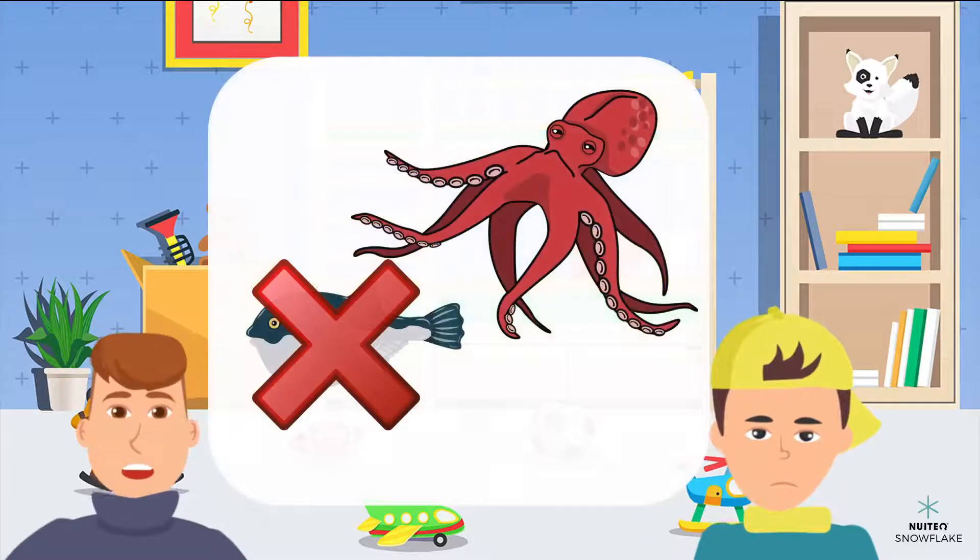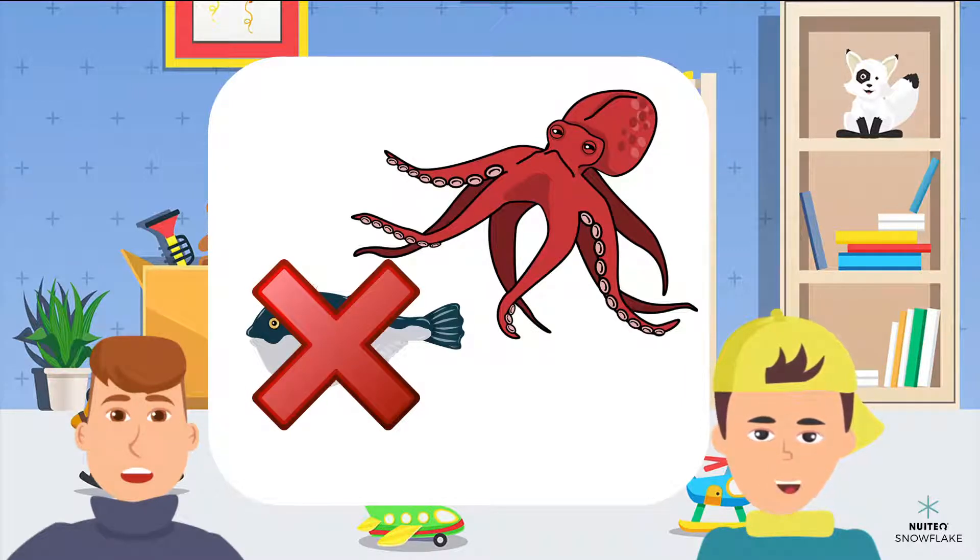But by tasting with their arms, octopuses can tell if something is toxic and dangerous for them, or not. So if it's toxic, they don't put it in their mouths. That's pretty clever.